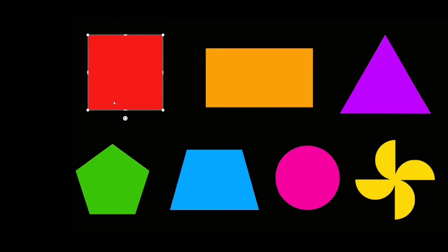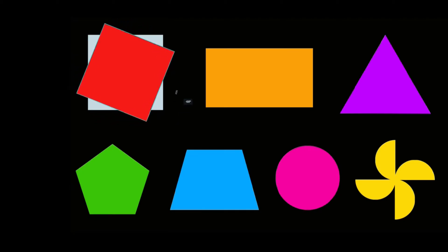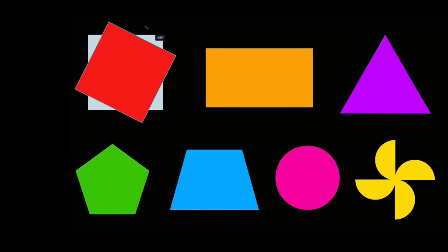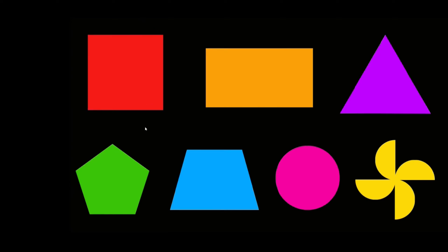So for example, we have this square right here. You can see if we rotate this thing 90 degrees, it's going to map onto itself exactly. And then if I rotate it another 90 degrees, it's going to map onto itself exactly. So this square has rotational symmetry, and that's going to be true for all regular polygons.